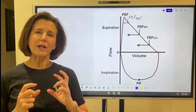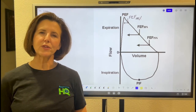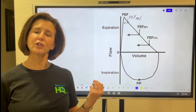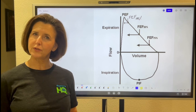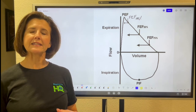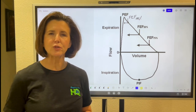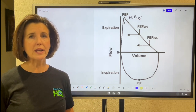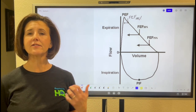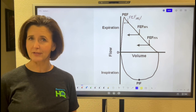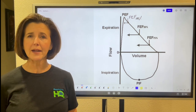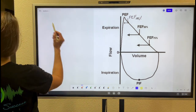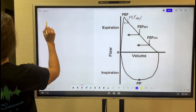Welcome back everybody. We are continuing on with our mini-series concerning the flow volume loop. Today what we're going to be doing is differentiating between restrictive and obstructive lung defects. So let's start out with restrictive disorders.